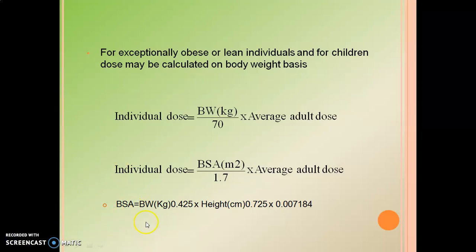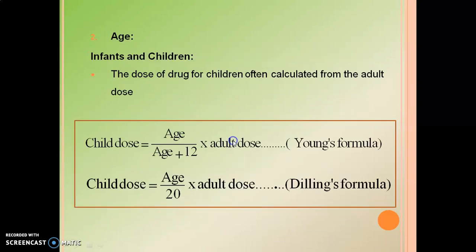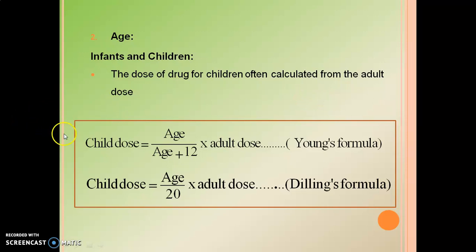The next factor is age. For infants and children, the dose of a drug is often calculated from the adult dose with the help of Young's formula and Dilling's formula. These are the two formulas used for infant and children dose calculations.